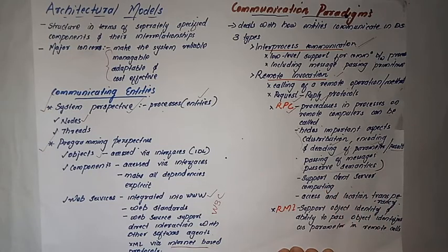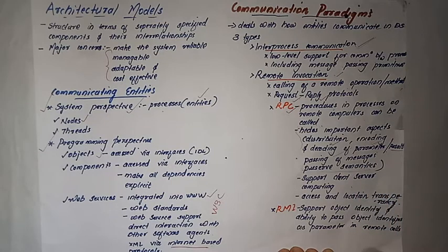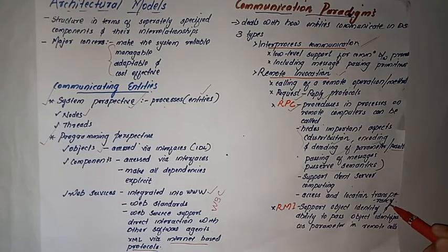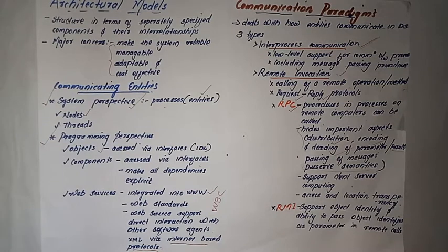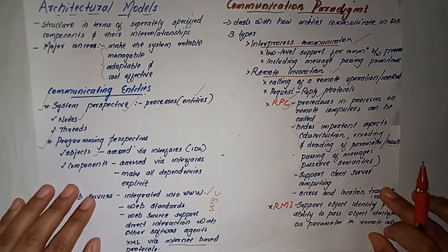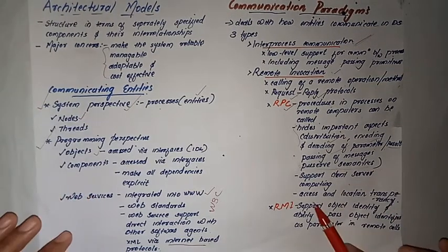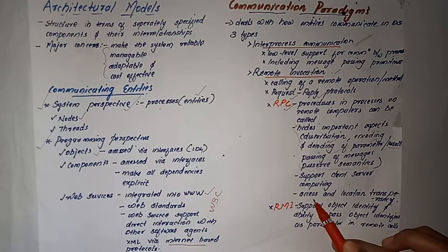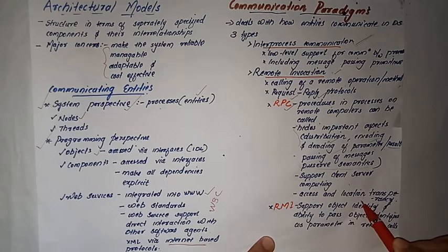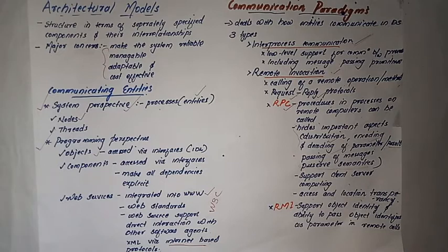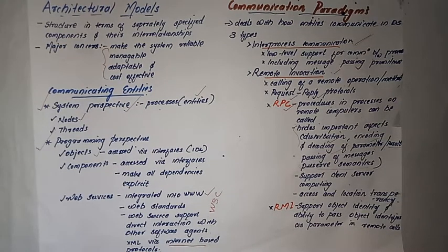RPC supports client-server computing. Using the request-reply protocol, a client requests a service and the server replies. This provides access transparency and location transparency. Access and location transparency are the two important transparent properties of RPC — you need access to the location of the service.